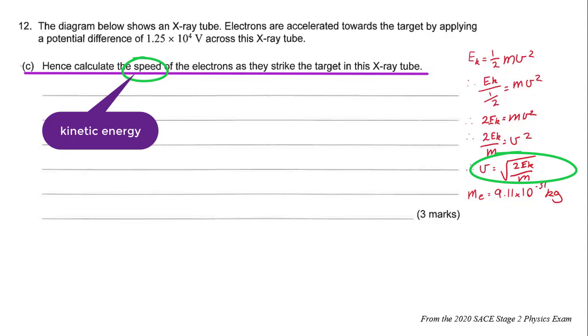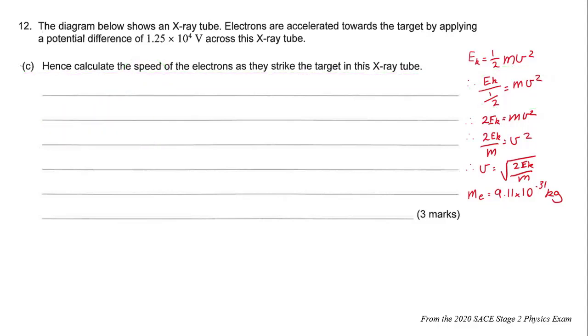You'd note there that there's a step where it says Ek/(½) = mv². Dividing anything by a half is the same as multiplying it by 2, that's why Ek/(½) becomes 2Ek on the next line. When we run the calculation we get 2 × 10^-15 joules, and that's the kinetic energy that it's going to have.